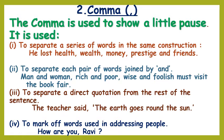We use a comma to separate each pair of words joined by 'and'. For example: man and woman, rich and poor, wise and foolish must visit the book fair. Let's read this sentence once again with a pause: man and woman, rich and poor, wise and foolish must visit the book fair.